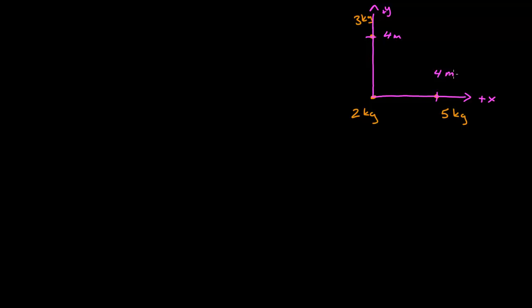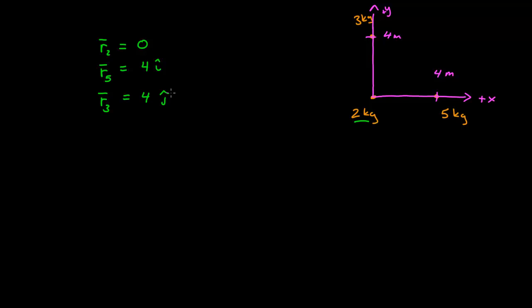This allows me to write the position vectors for each of my masses. The position vector for the 2 kg mass, r2, is 0 — it's at the origin. The position vector for the 5 kg mass, r5, is equal to 4 i-hat. I'm working in SI units, so I'll avoid writing units everywhere. The position vector for the 3 kg mass is 4 j-hat. The total mass is the sum of all individual masses, which is 10 kg.